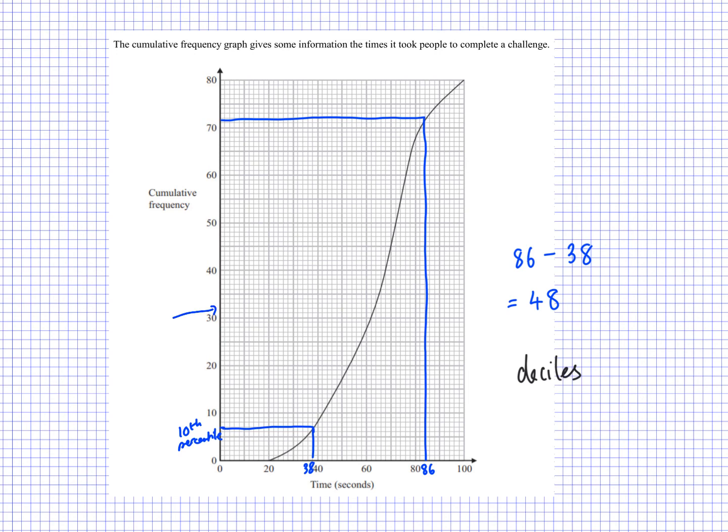So this is where the fourth decile is, fourth. And we just make a reading from the graph. And it looks like the fourth decile is going to be 64 seconds. So if you're asked for the fourth decile, for example, you will say 64 seconds.